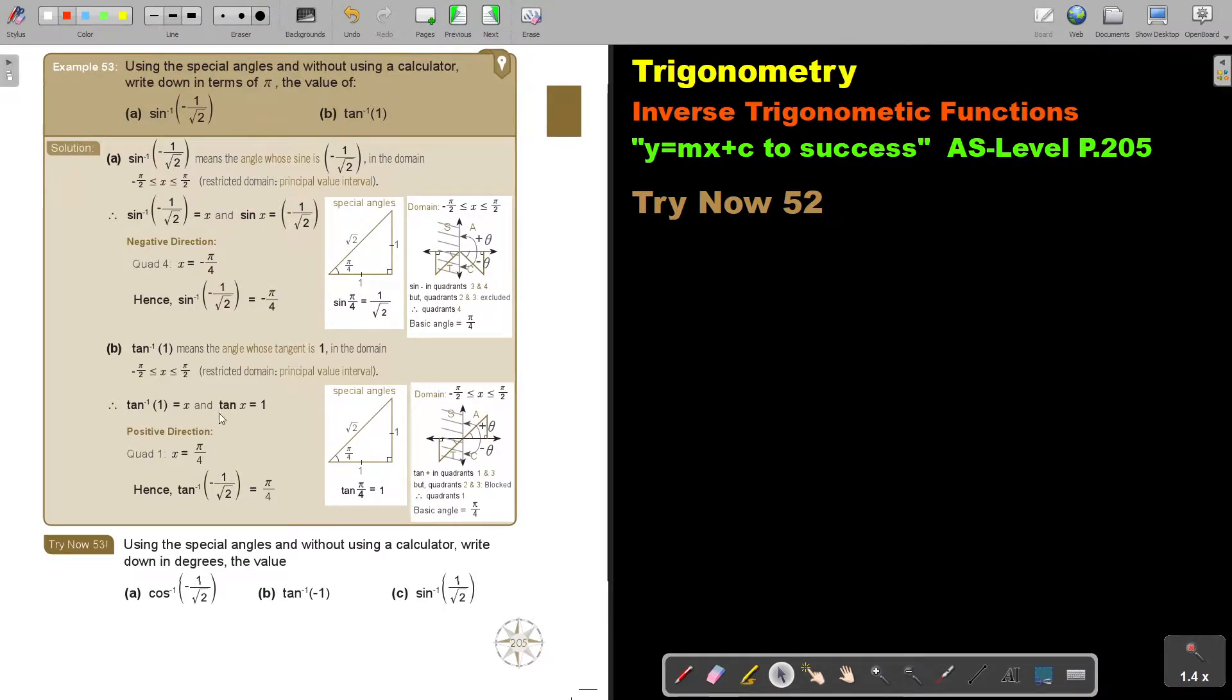Let's look at another example using the special angles. And without using a calculator. Very important. Write down in terms of pi the value. Now if you would have used a calculator I would have said stop and put your calculator on radian mode. But you're not going to use a calculator. So it's actually exactly the same. We just want to do it now in terms of radians.